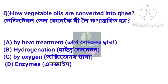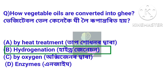Next question: How are vegetable oils converted into Ghee? Answer: By Hydrogenation. Through the hydrogenation process, vegetable oils are converted into Ghee.